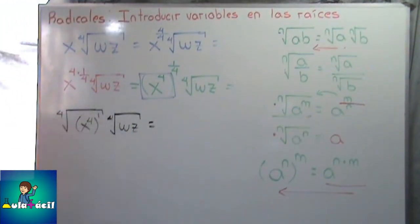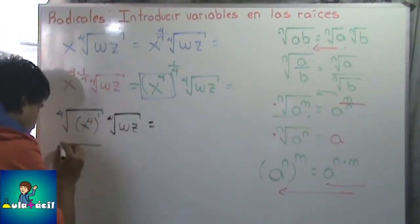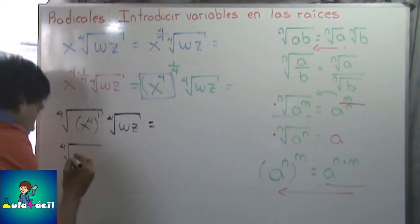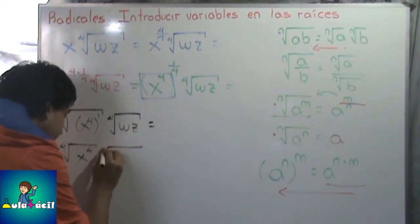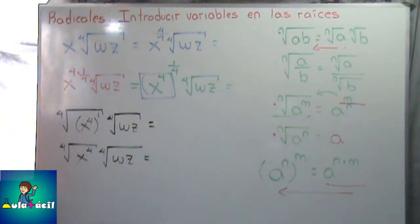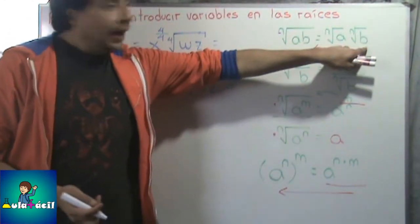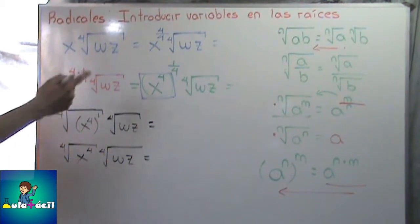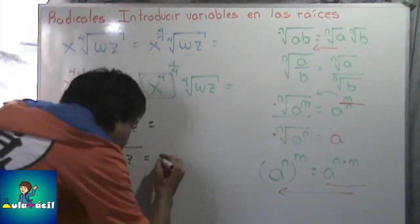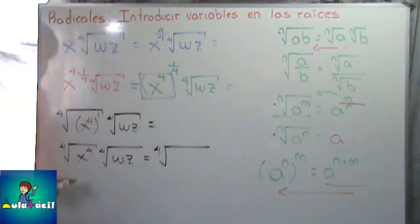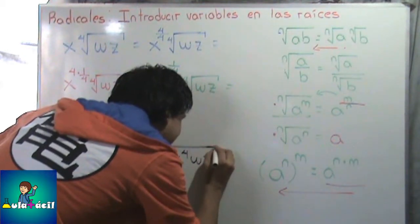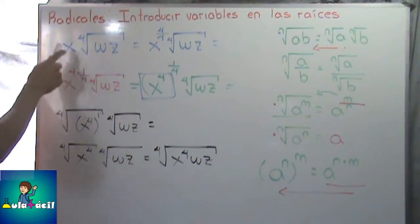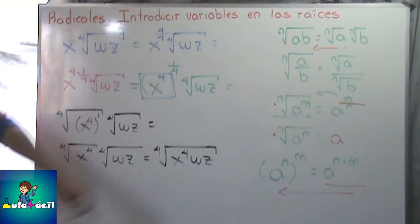Simplificamos lo que tenemos adentro de la raíz: raíz cuarta, potencia de potencias — escribimos la base X y multiplicamos los exponentes: 4 por 1 es 4. Por la otra raíz raíz cuarta de WZ. Como tenemos dos raíces que se están multiplicando con el mismo índice, las juntamos: raíz cuarta de X cuarta por WZ. Ya metí esta variable porque yo quise, y ese ya sería nuestro resultado.